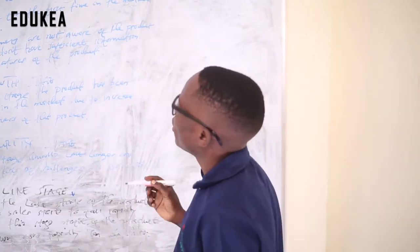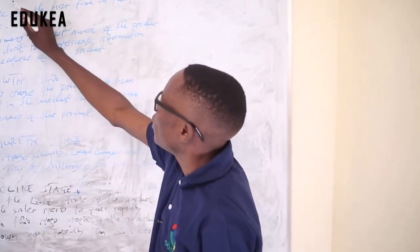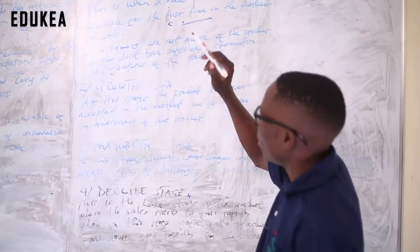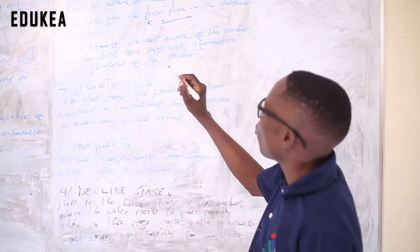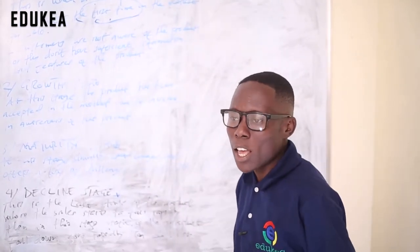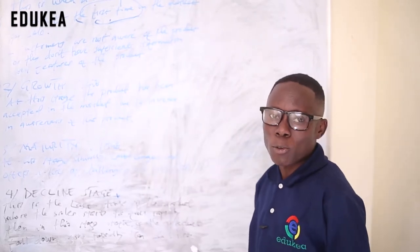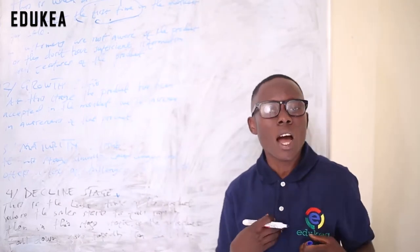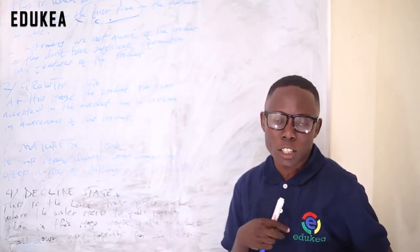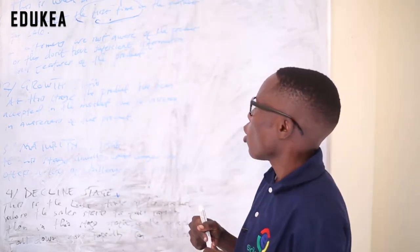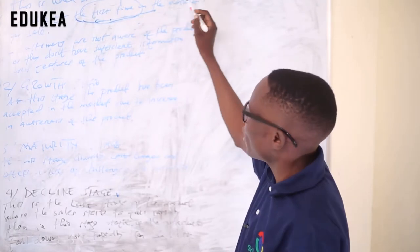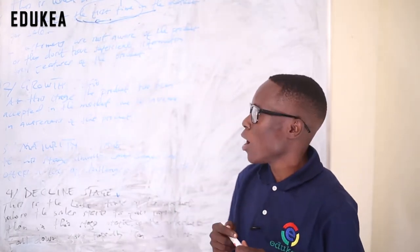Let us start with the introduction stage. According to Philip Kotler, this is when a new product is made available for the first time in the market for sale. For example, here at Educare, we introduce our t-shirts to the market for the very first time — we make them available for purchase in the market.